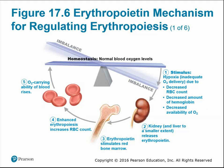In the EPO feedback loop, the stimulus is hypoxia — inadequate oxygen delivery — caused by decreased red blood cells, decreased hemoglobin, or decreased oxygen. This stimulates the kidneys to release erythropoietin, which then stimulates the red bone marrow to enhance red blood cell production and oxygen-carrying capacity. Once oxygen-carrying capacity is restored and tissues are getting enough oxygen, erythropoietin production is turned off.